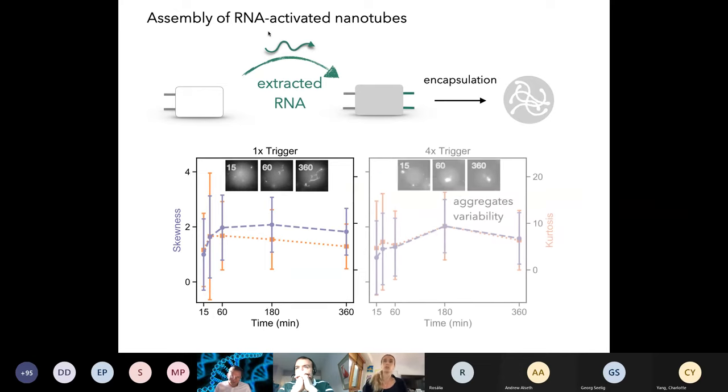However, one thing we observed is that if you add too much RNA, what happens is we have aggregates instead of well-formed nanotubes, and we think that because RNA is generally very sticky, it promotes aggregation and more variability. It's important to note here that the skewness and kurtosis method doesn't tell you the difference, meaning that it will still tell you, yes, you do have condensation, you do have assembly, but you can't tell by just looking at the graph whether they are actually nanotubes or aggregates. The key thing is you need to have the right amount of RNA. If you have too much, your nanotubes are not forming properly.